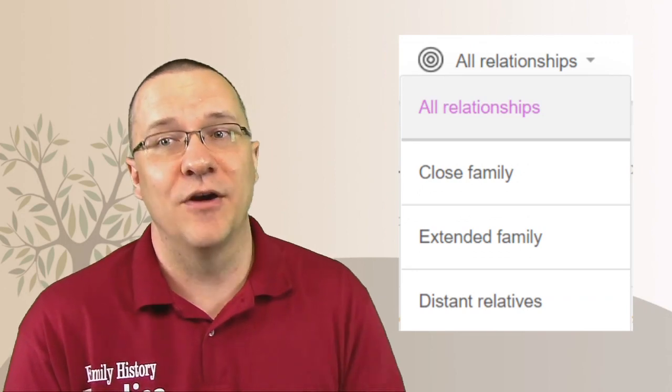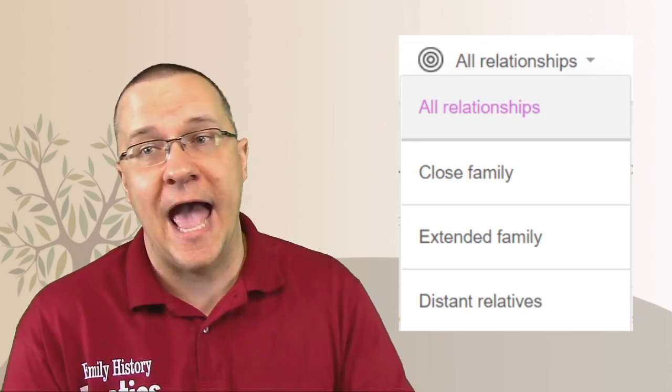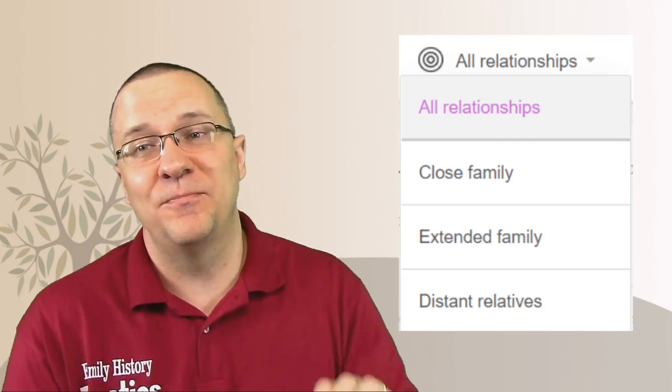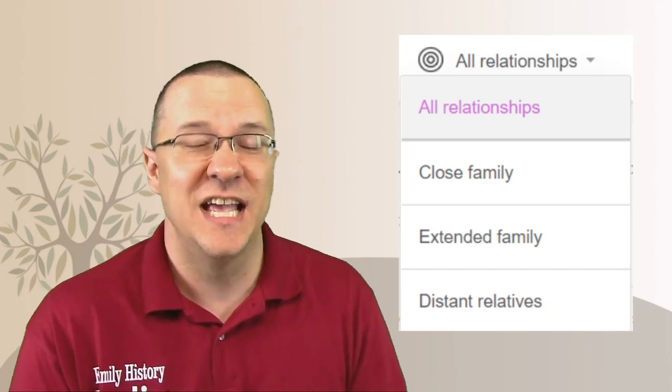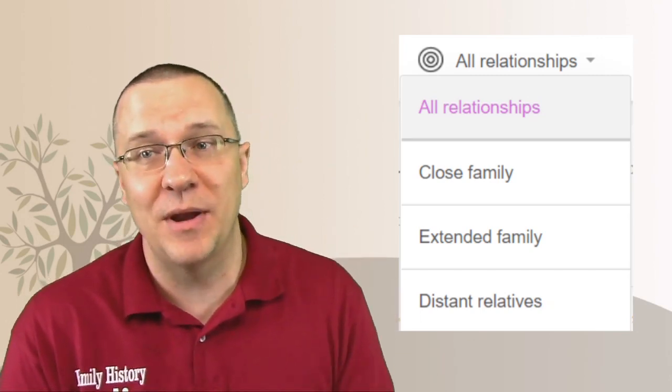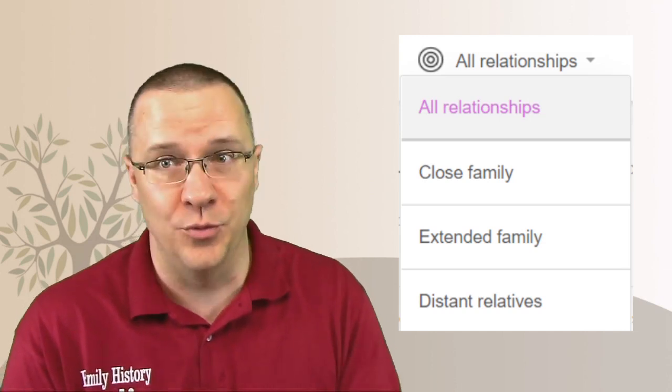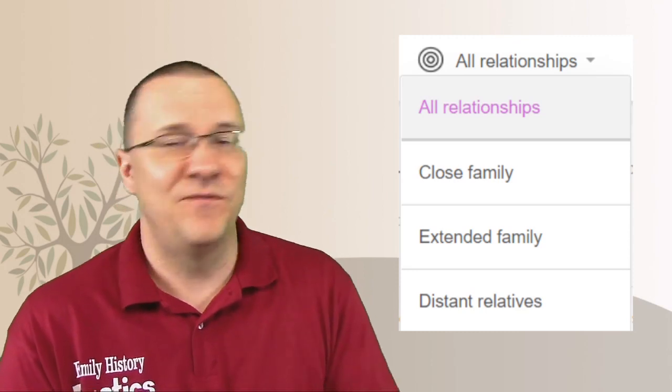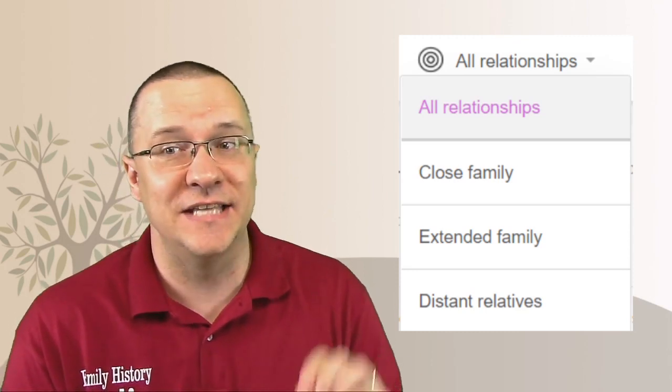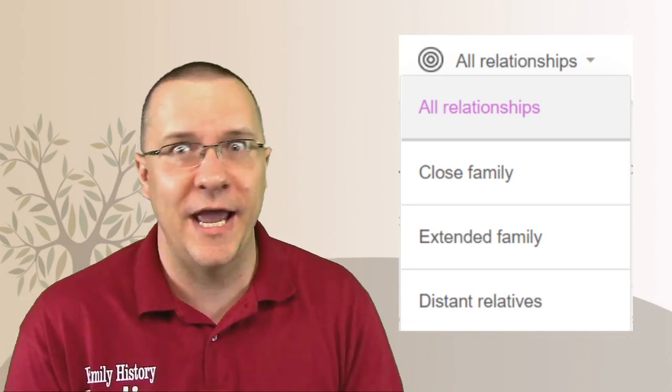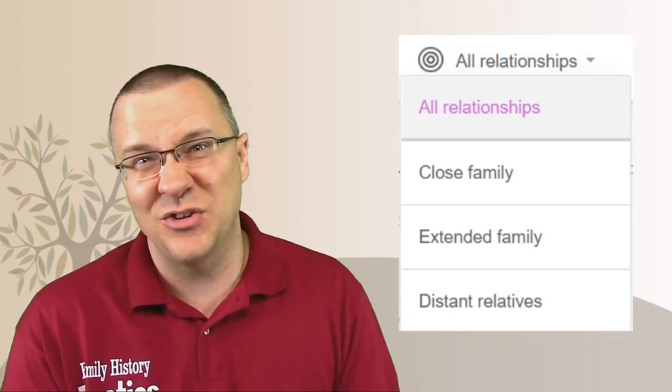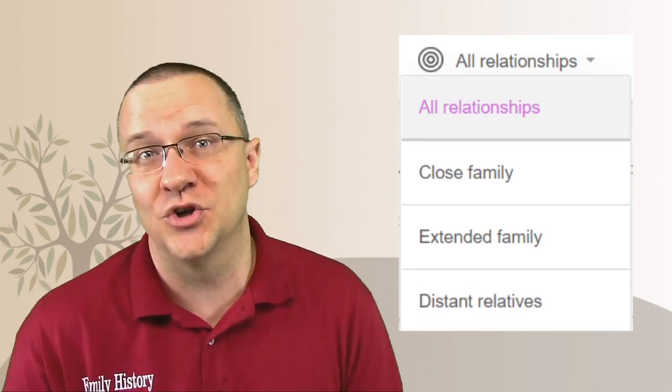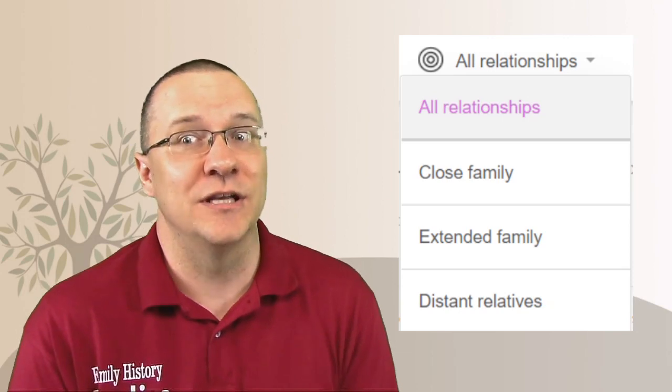Over on MyHeritage, they have the ability to look at close family members, they have the ability to look at extended family members, and they have the ability to look at distant relatives. Now, Ancestry combines the close family members and the extended family members into one group, whereas MyHeritage actually breaks it out into separate groups. Unfortunately, what MyHeritage doesn't have is they don't have the ability to search by a range of centimorgans. They also don't tell you how many matches are in each group. So you don't know how big of a list you're going to be seeing until you actually click on it.